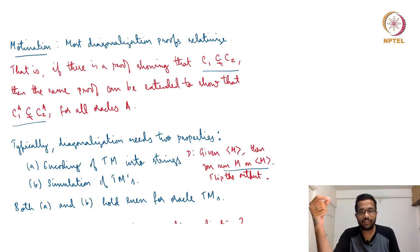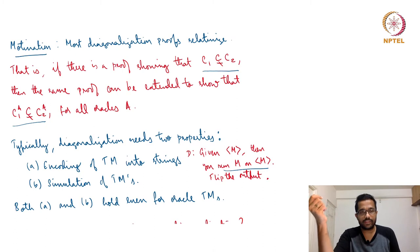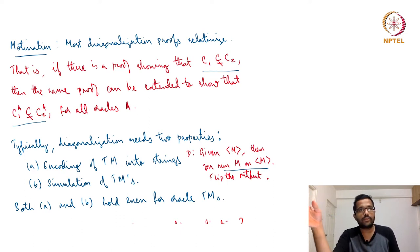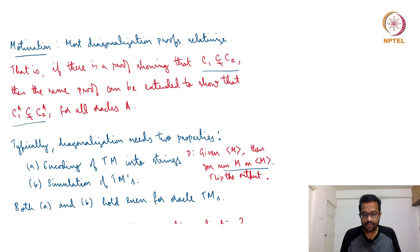The only new thing for an Oracle Turing machine is that there are oracle calls to be made. Oracle calls involve checking membership, and this can also be included in the simulation — checking membership and answering yes or no. Second, encoding of Turing machines into strings can also be done for Oracle Turing machines, because Oracle Turing machines are just like any other Turing machines, but with three special states — Q_query, Q_yes, Q_no — and an extra tape. So encoding fits well within the framework of any other Turing machine.